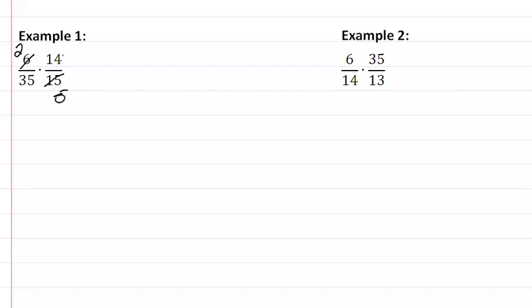14 and 35 have a common factor of 7, so 14 divided by 7 is 2, and 35 divided by 7 gives me 5. If I multiply now, I'm going to get 4/25. Notice that I have no common factors in my answer.